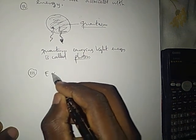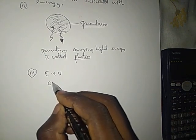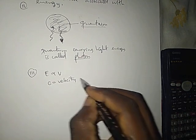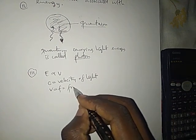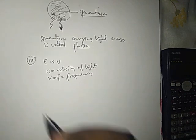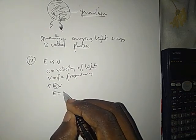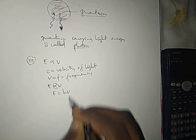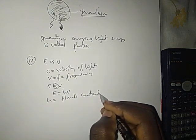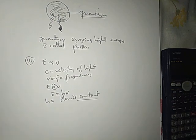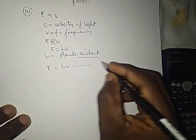The velocity of light we write as C. C is the velocity of light. Frequency we write as V. Energy is directly proportional to V. Removing the proportionality sign, energy will be equal to constant H times V. Now H is called Planck's constant. So if we take E is equal to H times V, then we call it equation one.